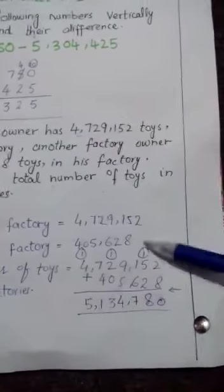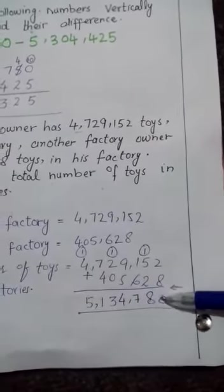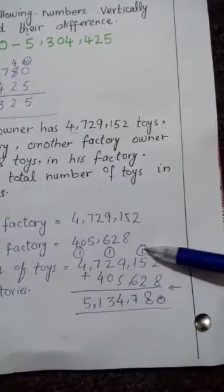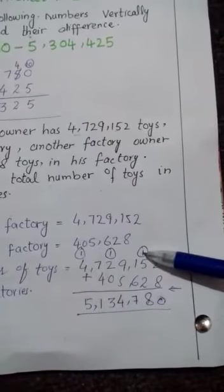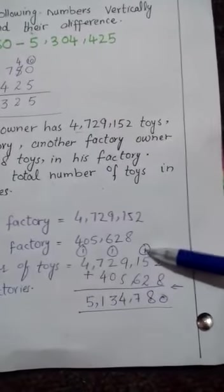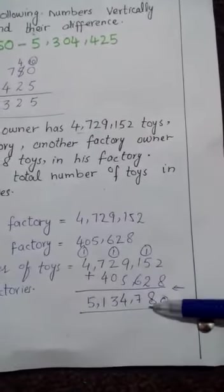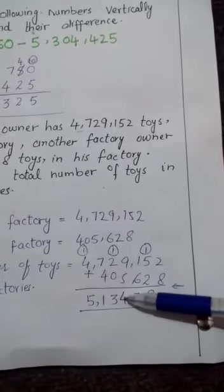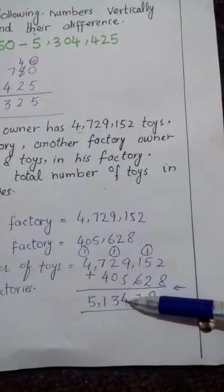9 plus 4 is 14. 2 plus 1 is 3. 7 plus 4 is 11. 1 is here and 1 is carried to the next